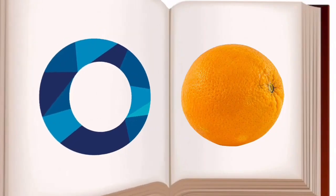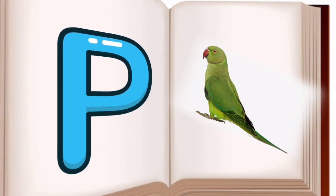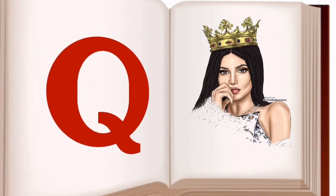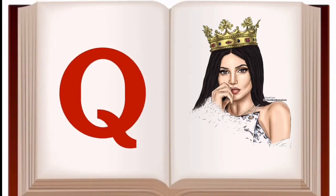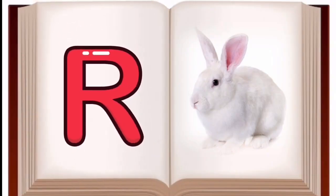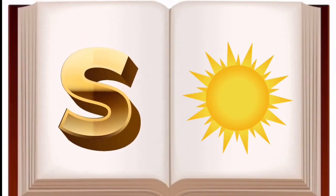O for orange, orange mane santra. P for parrot, parrot mane tota. Q for queen, queen mane rani. R for rabbit, rabbit mane kargose.